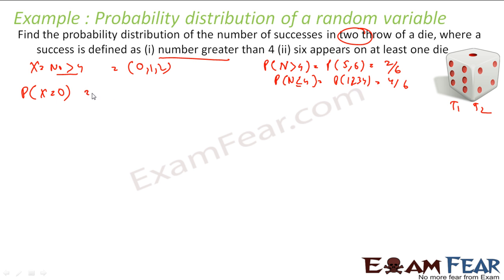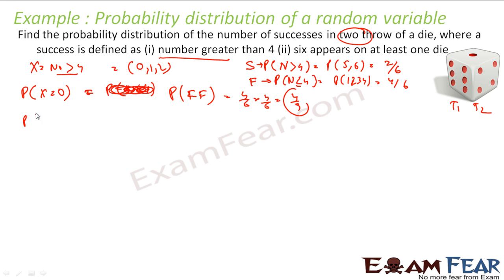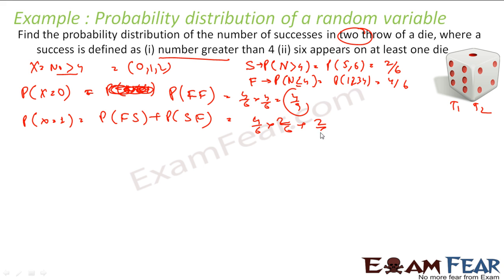For x equal to 0: we call getting greater than 4 as success and the rest as failure. Probability of failure-failure is 4/6 times 4/6, which is 4 by 9. Probability of x equal to 1: you get failure in first and success in second, or success in first and failure in second. Since they are independent events: (4/6)(2/6) + (2/6)(4/6), which equals 4 by 9. For x equal to 2: success in both cases — 2/6 times 2/6 — equals 1 by 9.